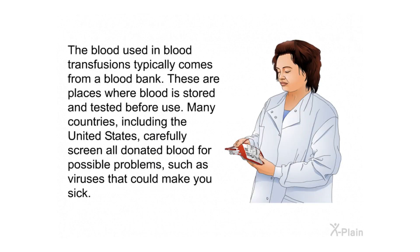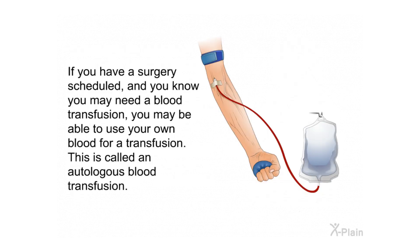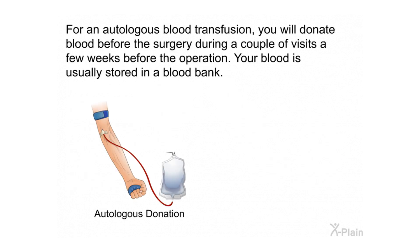Types of blood transfusions. The blood used in blood transfusions typically comes from a blood bank — places where blood is stored and tested before use. Many countries, including the United States, carefully screen all donated blood for possible problems, such as viruses that could make you sick. If you have a surgery scheduled and know you may need a blood transfusion, you may be able to use your own blood. This is called an autologous blood transfusion. You will donate blood before the surgery during a couple of visits a few weeks before the operation, and your blood is usually stored in a blood bank.